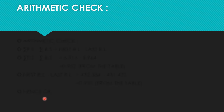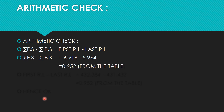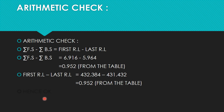The next step is the arithmetic check to verify whether our reduced level values are correct. The check is: summation of foresights minus summation of back sights should equal the difference between the last RL and the first RL. That is 6.916 minus 5.964 equals 0.952. Also, 432.384 minus 431.432 equals 0.952. Since both values are equal, our calculation of the reduced levels is correct. Thank you everyone, we will meet in the next video.